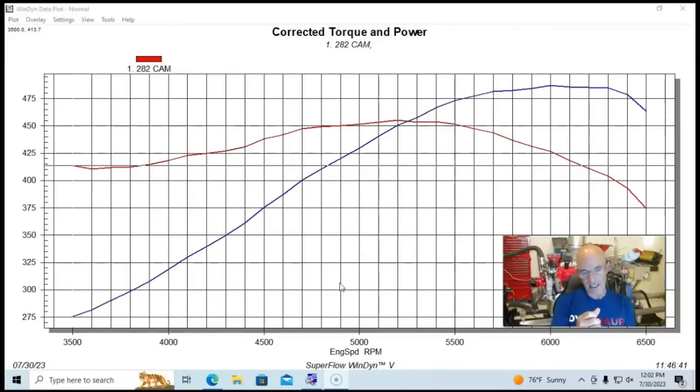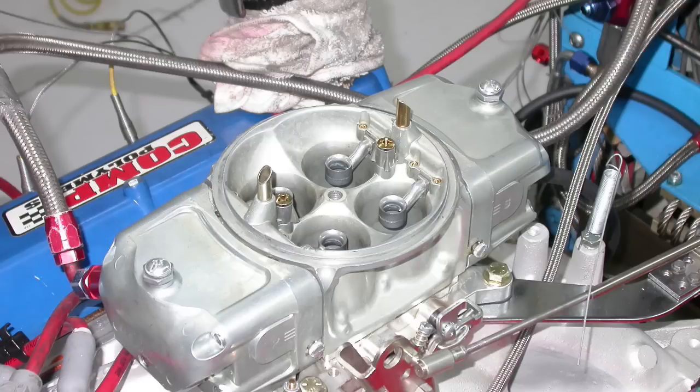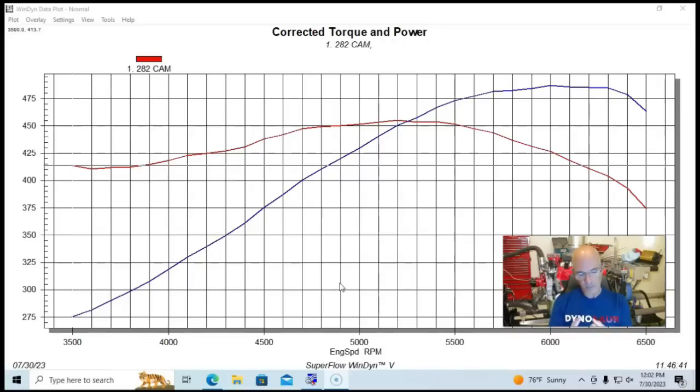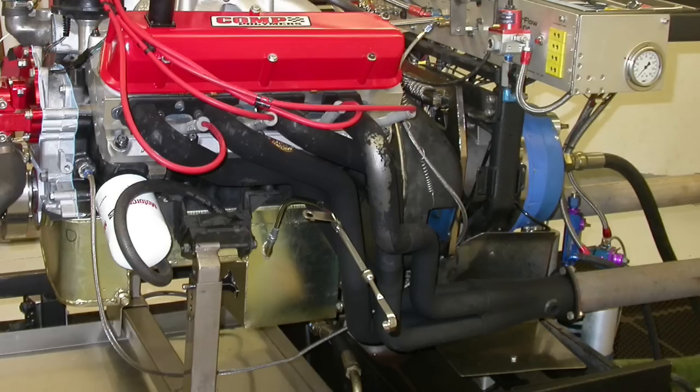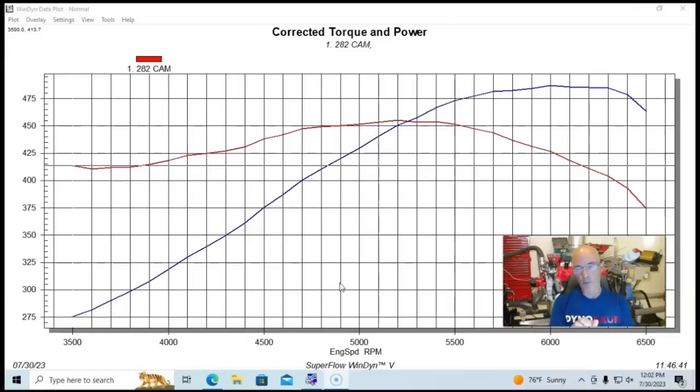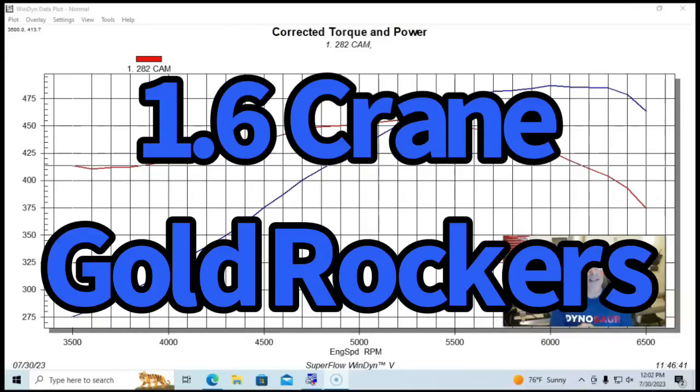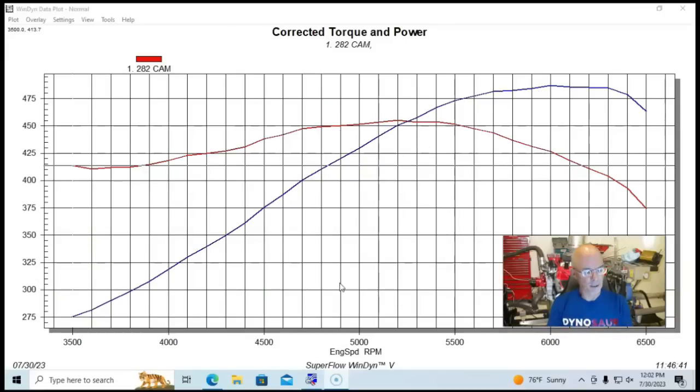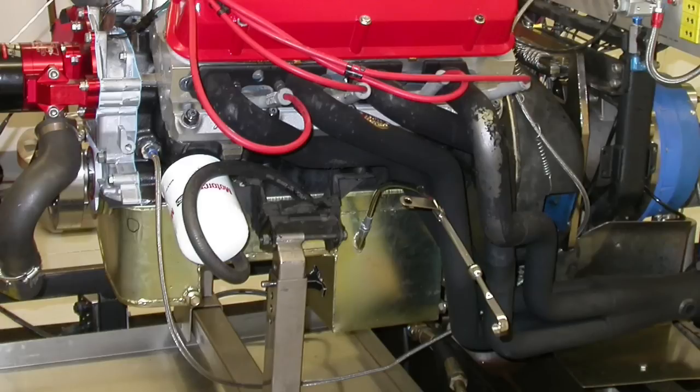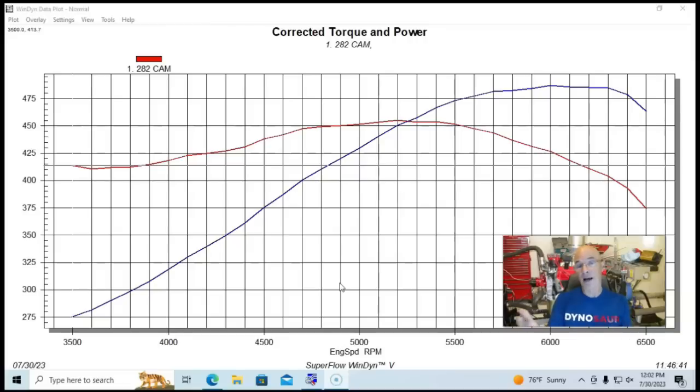We ran, tried a 750 and an 850 carburetor. They both made similar power in this combination. We ran inch and three-quarter long tube headers. We ran 1.6 Crane or Comp gold roller rockers, obviously hardened pushrods, double roller timing chain, all that stuff. We also had a Milodon oil pan and we had this one.